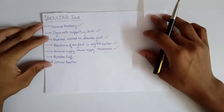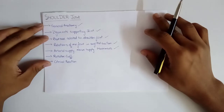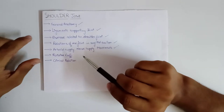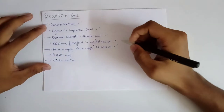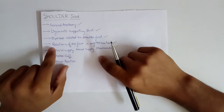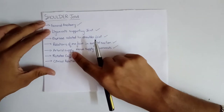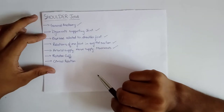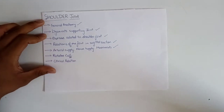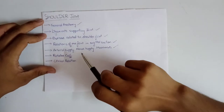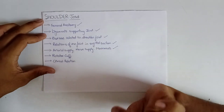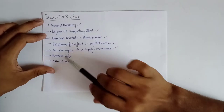Hello juniors. Welcome to the series on upper limb. We were covering the topic shoulder joint, and this video is the last video — part 3 of shoulder joint. In the previous video we covered relations of the joint in sagittal section, arterial supply, nerve supply, and movements of shoulder joint. I strongly recommend you watch the previous video on sagittal section for better understanding of today's topic: rotator cuff.